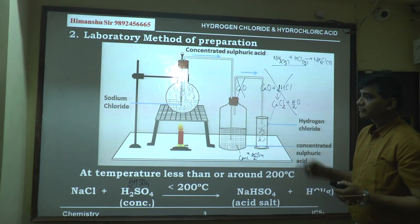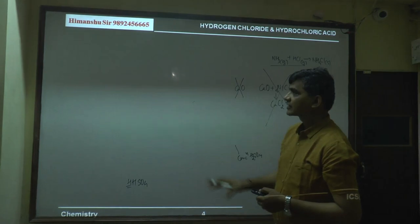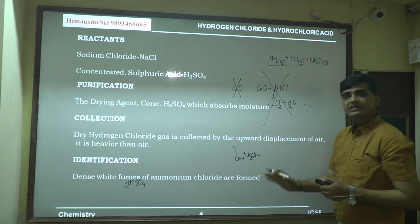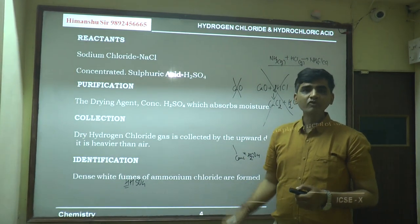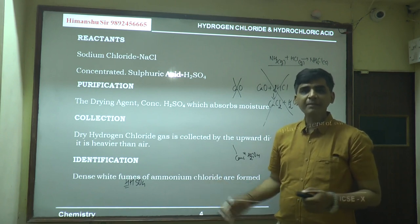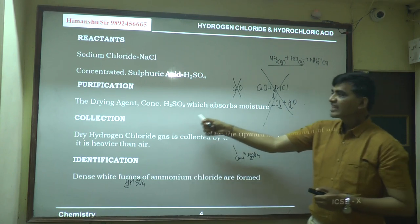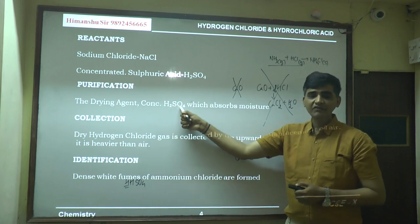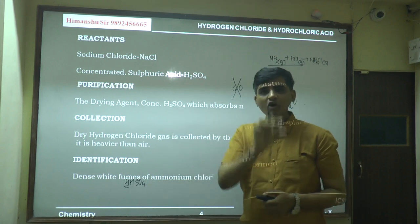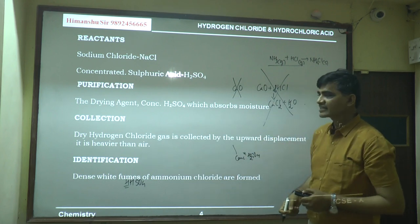Summary of laboratory preparation of HCl: reactants are sodium chloride and concentrated sulfuric acid; temperature is below 200°C. Above 200°C the reaction is not allowed because fuel is wasted, the apparatus may break, and sodium sulfate — a hard insoluble mass — is formed. The drying agent is concentrated sulfuric acid, which absorbs moisture to give dry HCl gas. When asked to name the drying agent, write 'concentrated sulfuric acid' and not just the formula.